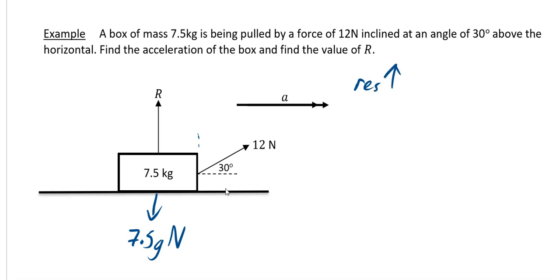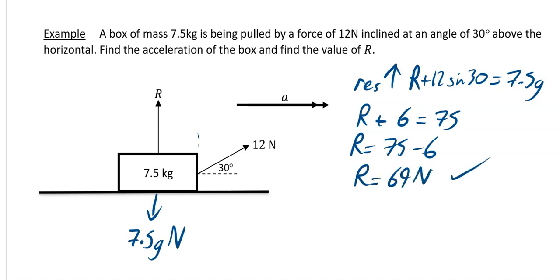So going up, I've got my r. I've also got a certain amount of this 12 newton force going up as well. So going vertically, it's 12 sin 30. And then going down, it's just 7.5 times g. So if we sort that out, that's going to be r plus 6 is equal to 75. That means r is equal to 75 minus 6. So your r works out to be 69 newtons.